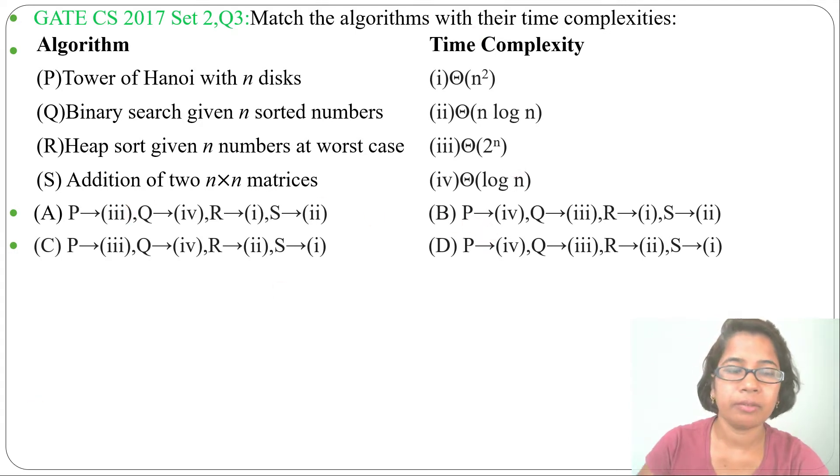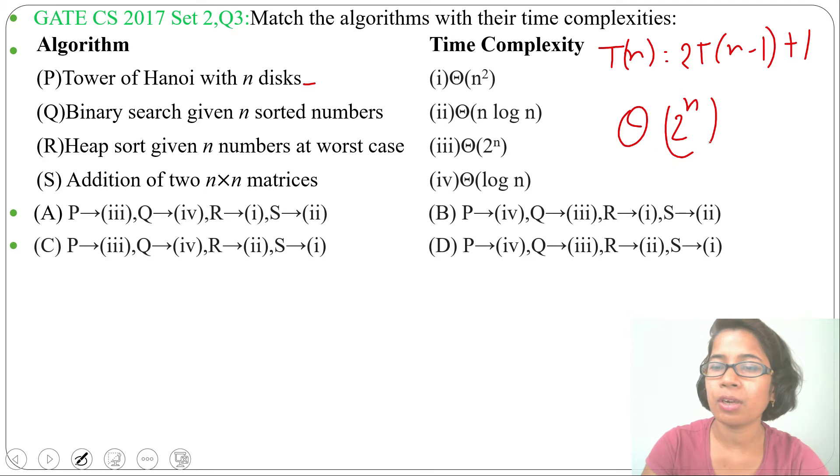Let's check each algorithm one by one. First algorithm: Tower of Hanoi with n disks. I already discussed Tower of Hanoi. For Tower of Hanoi, its recurrence relation is T(n) = 2T(n-1) + 1, and the running time is Θ(2^n). You can solve by backward substitution, recurrence tree method, or master theorem for decrease and conquer. So for Tower of Hanoi with n disks, time complexity is Θ(2^n).